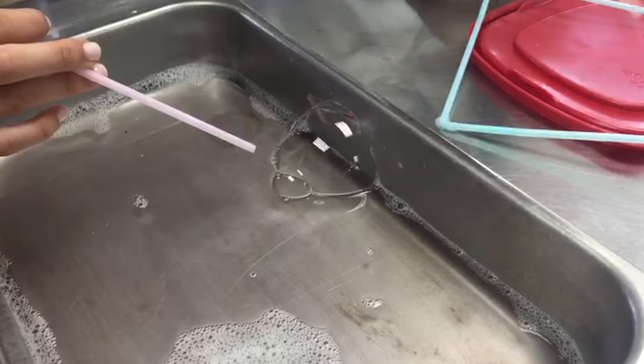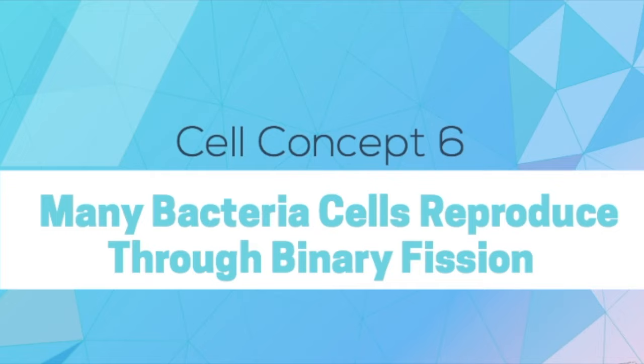Cell concept 6: Many bacteria cells reproduce through binary fission. In this step, a bubble was formed and a thread was put into the water and lifted through the middle of the bubble. The bubble rapidly split into two. This concept relates to the idea of binary fission, which is how some single-celled bacteria reproduce, splitting into two.